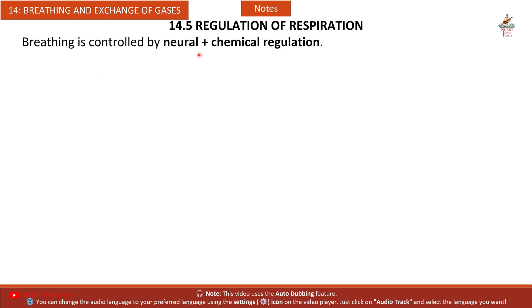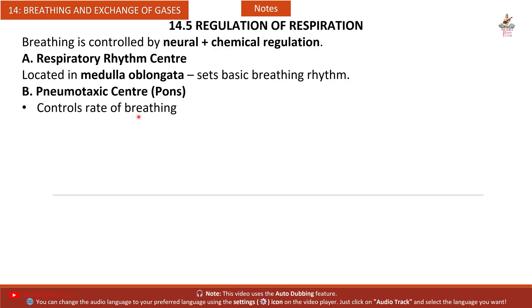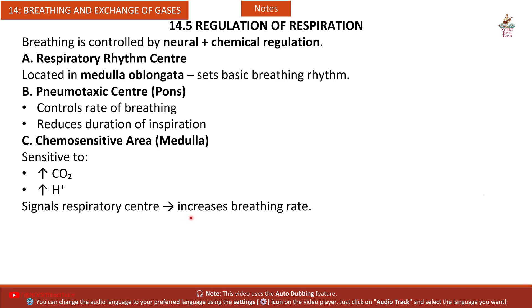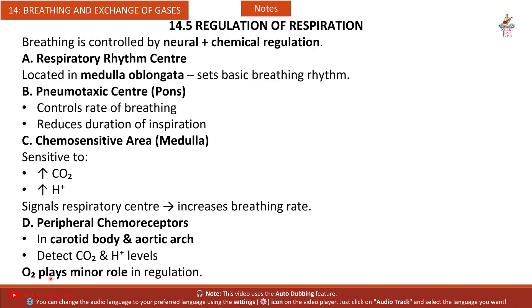Section 14.5 — Regulation of Respiration. Breathing is controlled by neural and chemical regulation. A) Respiratory rhythm centre in the medulla oblongata sets the basic breathing rhythm. B) Pneumotaxic centre controls rate of breathing and reduces duration of inspiration. C) Chemo-sensitive area in the medulla is sensitive to high CO2 and high H+ — signals the respiratory centre to increase breathing rate. D) Peripheral chemoreceptors in the carotid body and aortic arch detect CO2 and H+ levels; O2 plays a minor role in regulation.